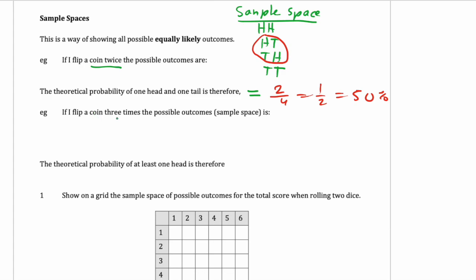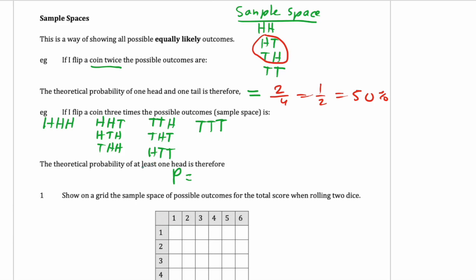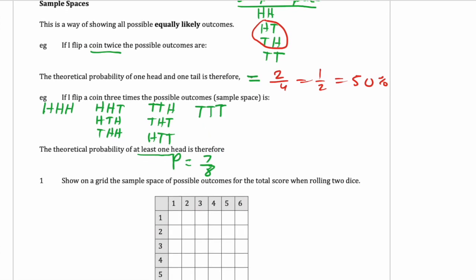If we flip a coin 3 times, we have these possibilities: heads-heads-heads; 1 tail and 2 heads, which you can arrange 3 ways; 2 tails and 1 head, which also has 3 arrangements; and tails-tails-tails. So there's a total of 8 possible outcomes in the sample space. The probability of at least 1 head means 1, 2, or 3 heads — there are 7 of those out of 8. Or you can do 1 minus the probability of no heads, since there's only one way that can't happen. So the answer is 7 out of 8.